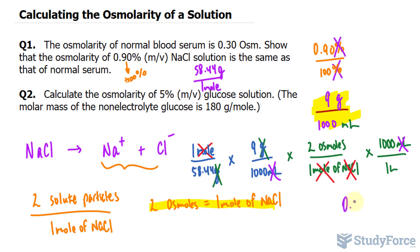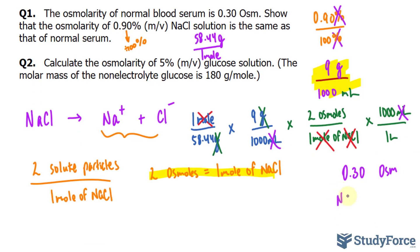0.30. So let's write this down. OSM osmoles per liter sodium chloride solution.